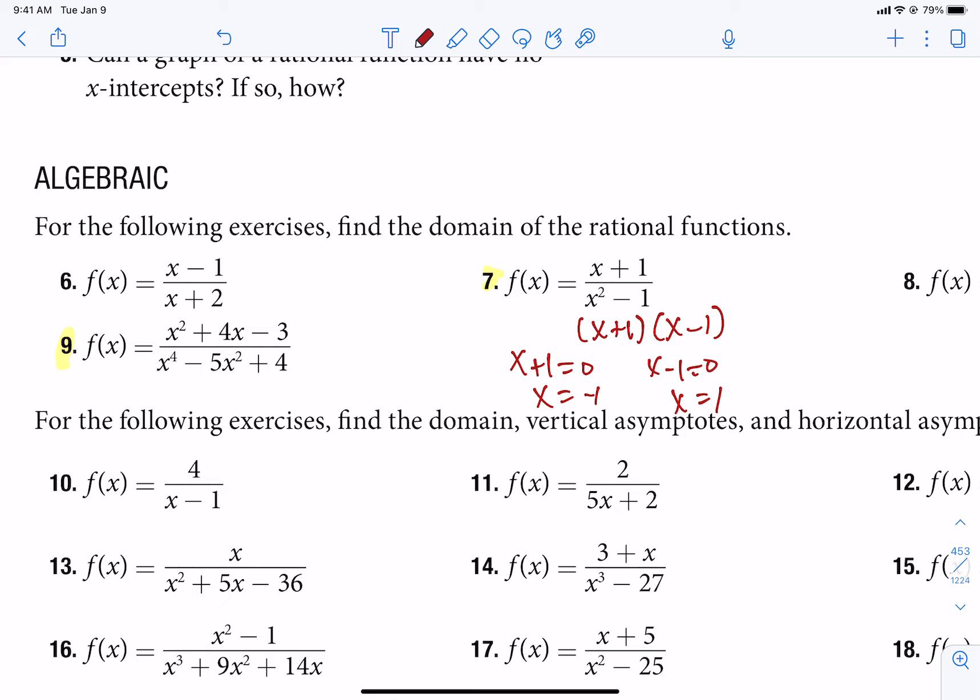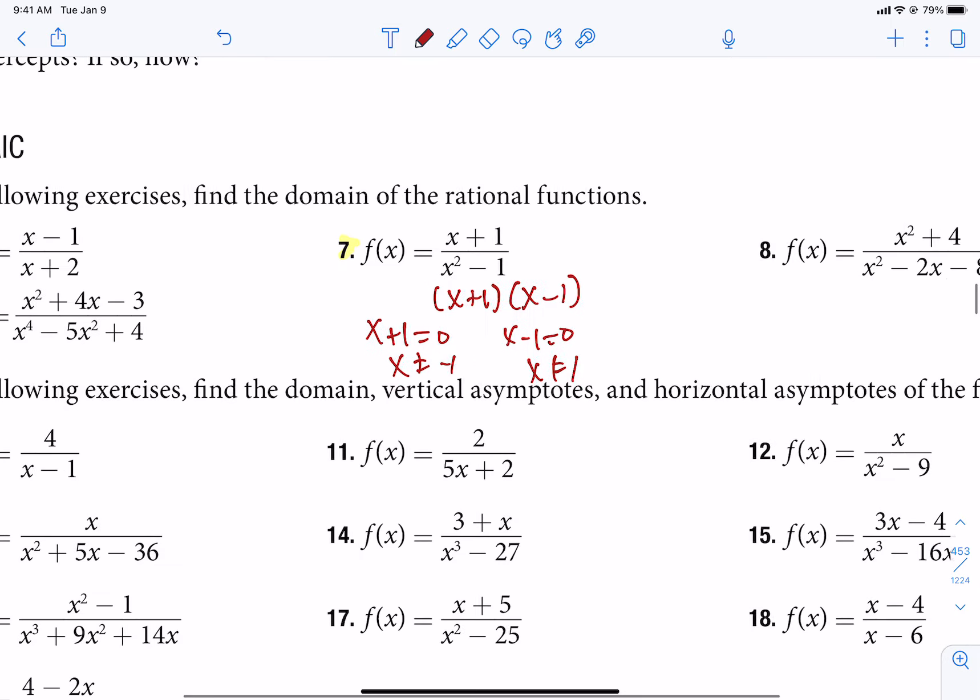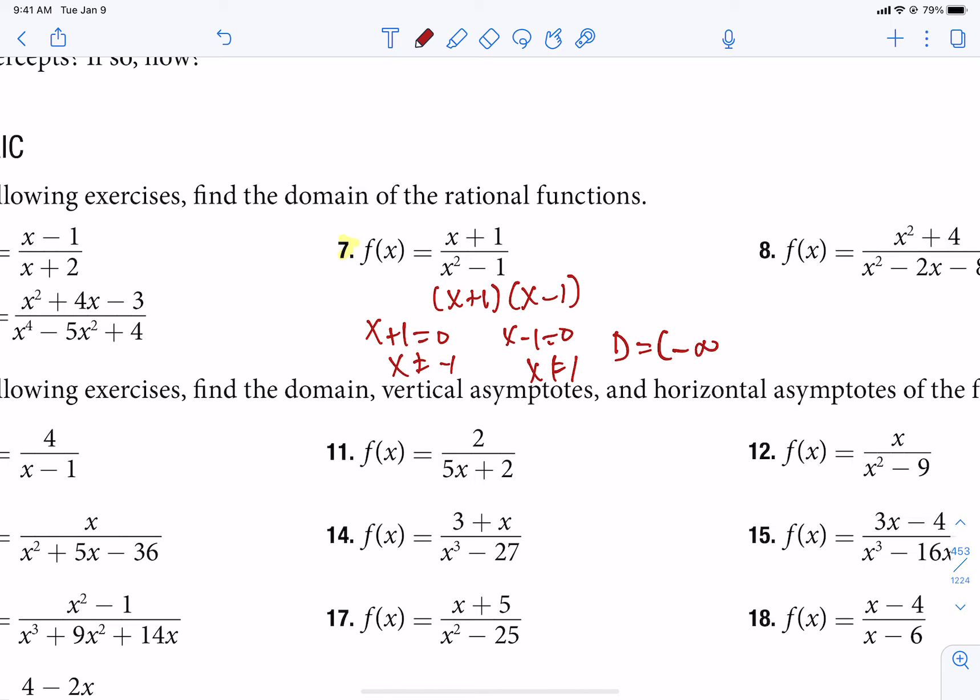We have to take out negative 1 and positive 1 from our domain. So the answer to 7, we would use everything up to negative 1, skip it, up to positive 1, skip it, and then keep going.